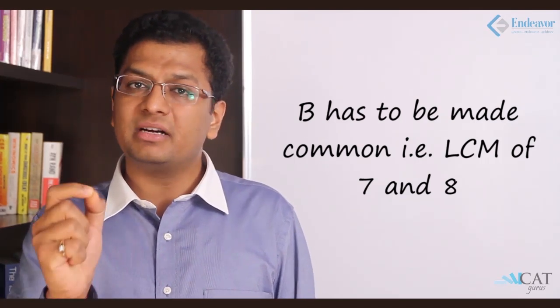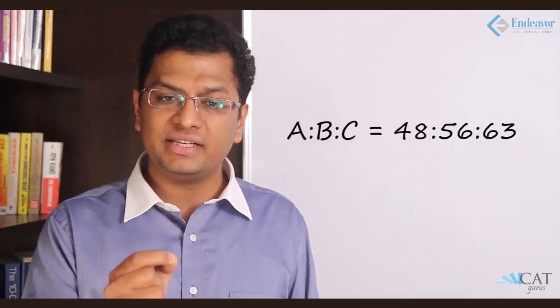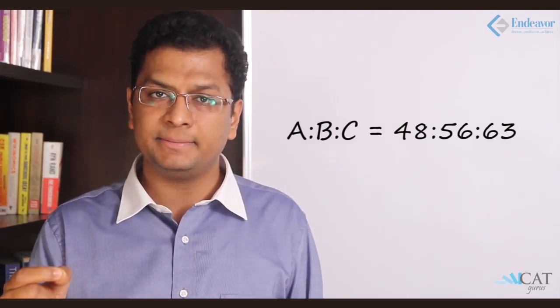The mean term will become 56. If we go back to the first one, A is to B is 6 is to 7, so 7 becomes 56 which is multiplied by 8. 6 also has to be multiplied by 8, so it becomes 48. What happens to C? B is multiplied by 7, so C should also be multiplied by 7, and that becomes 63. A is to B is to C is nothing but 48 is to 56 is to 63. This becomes the A is to B is to C.